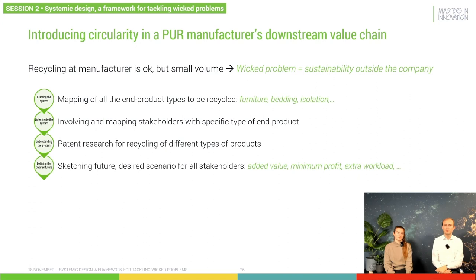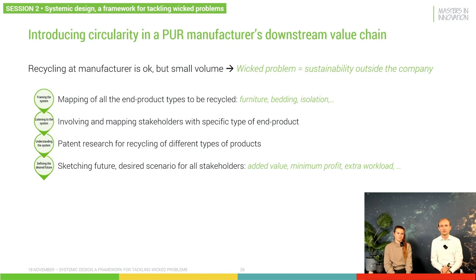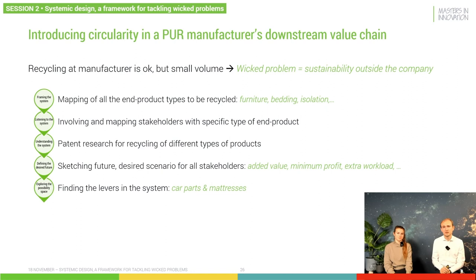In a fourth step — and it's important to engage the stakeholders for this — was sketching the future. We were looking at what is important for each of these different stakeholders: is it providing added value to their customers? Is it making a minimum profit on the recycled materials? Or is it just avoiding an extra workload for them? After having mapped out the system and looked at the future scenarios, we went into finding the levers in that system — which changes could have the biggest gain in circularity from that polyurethane material?